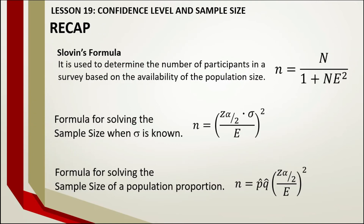Let's have a recap of what we have just learned. Slovin's formula, n equals N over 1 plus N times e squared, is used to determine the number of survey participants based on population size. The formula for sample size when standard deviation is known is n equals (Z times σ divided by E) squared. For population proportion, the formula is n equals P-hat times Q-hat times (Z divided by E) squared. Always base the formula choice on what is given in the problem.